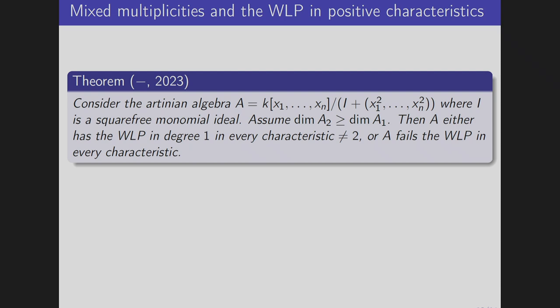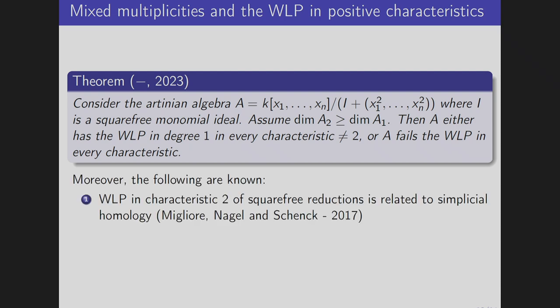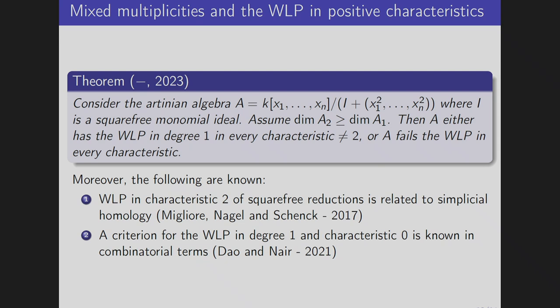It's characteristic-free in some sense if you forget about characteristic two. The condition that the second degree component has higher dimension than the first is not asking for much: if you think of I as the Stanley–Reisner ideal of some complex, you're just asking that your simplicial complex has more edges than vertices, which is very reasonable. It is also known that WLP in characteristic two of square-free reductions is related to simplicial homology, and there is a criterion for WLP in degree one and characteristic zero in terms of the combinatorics of the ideal.